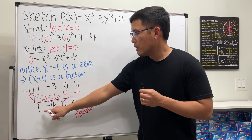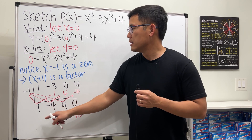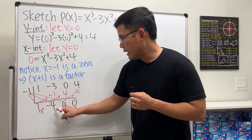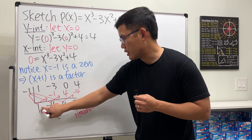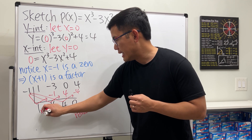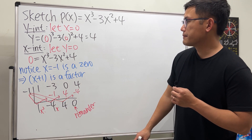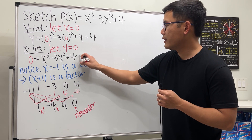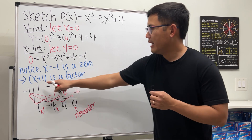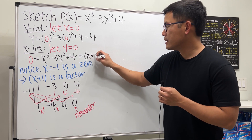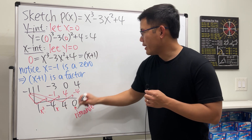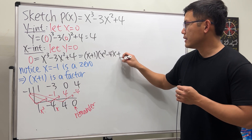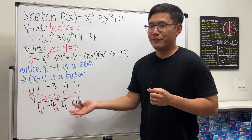Since we divided a cubic by x to the first power, the quotient starts one degree less. The quotient parts give us x² - 4x + 4. So we can factor the polynomial as (x + 1)(x² - 4x + 4).